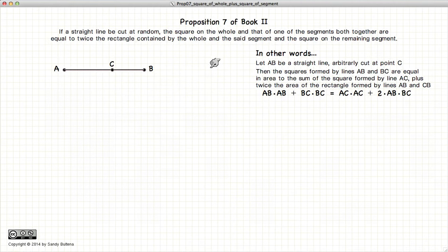This video presentation is going to be on Proposition 7 of Book 2, which states that if we have a line AB cut at an arbitrary point C, then the square of AB plus the square of CB, so these two squares added together,